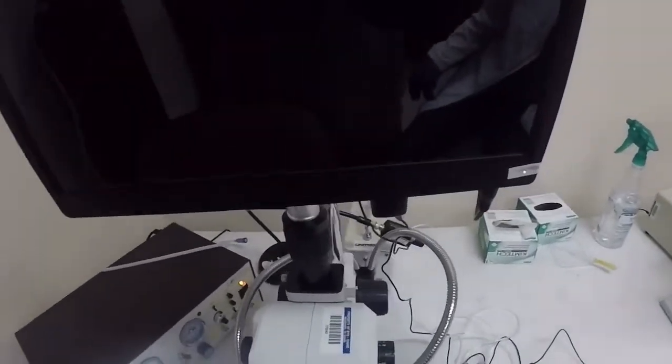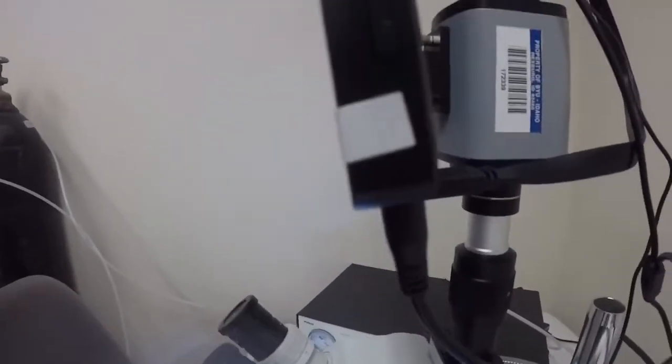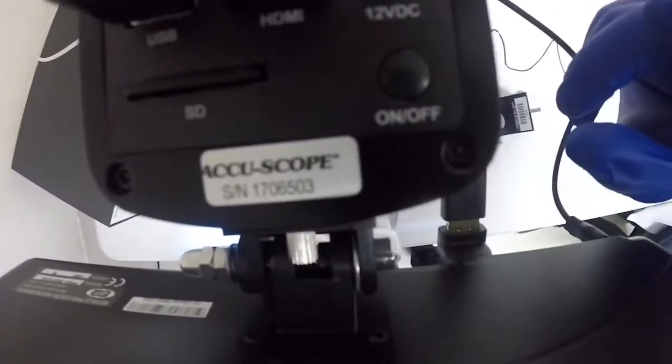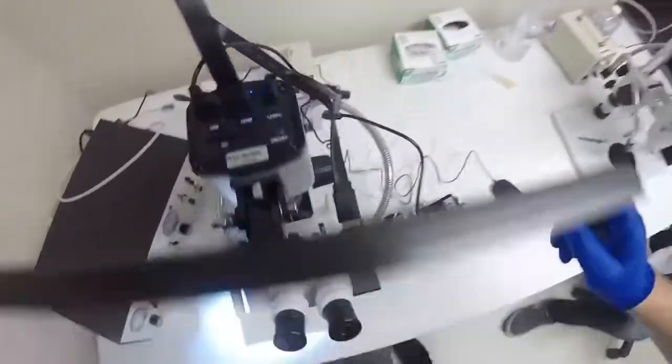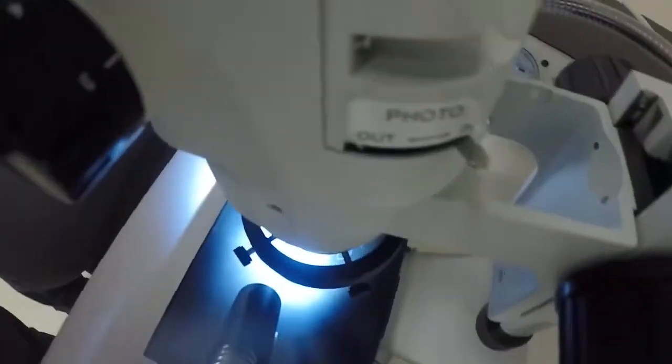If you're using the monitor, you'll want to push this power button right there on the side. You'll see that come up. There's a button on top here, you'll press on. You'll see that blue light come on, and then that no signal message will disappear. And then you will hit the switch right here.